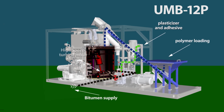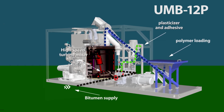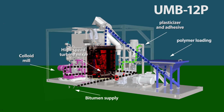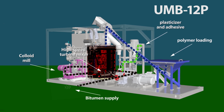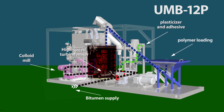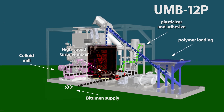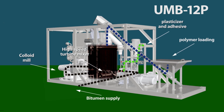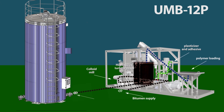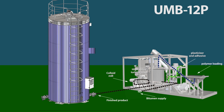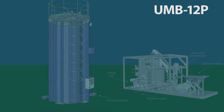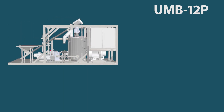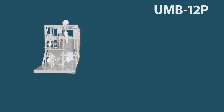A high-speed turbine mixer operates in the tank, which pre-mixes the polymer and bitumen. The resulting mixture is fed to a colloidal mill with a special profile for final grinding, shearing, and homogenizing the polymer-containing bitumen. The finished product is then supplied through the outlet to a storage or transportation container — only one pass through the mill is sufficient.